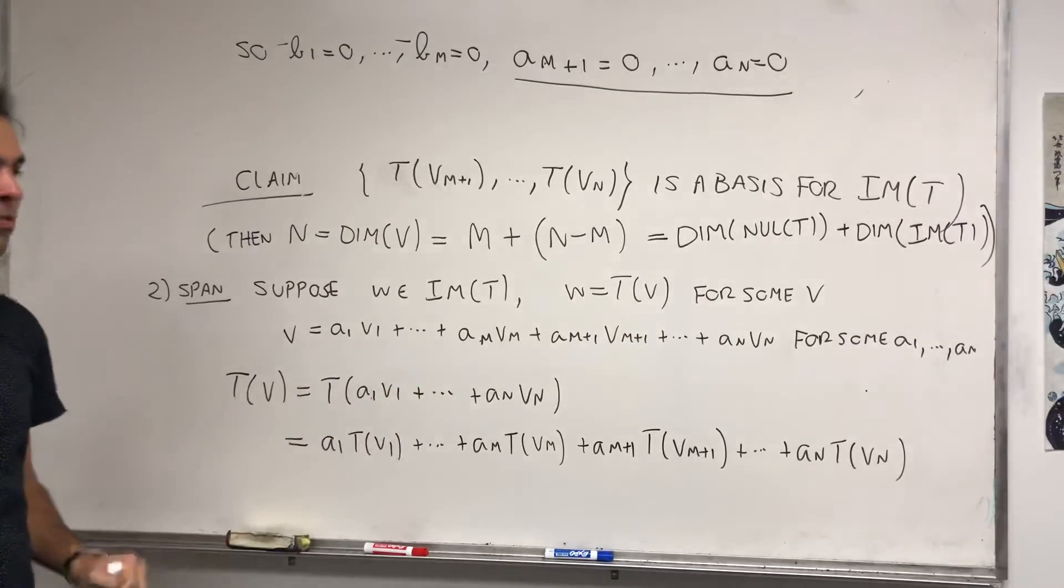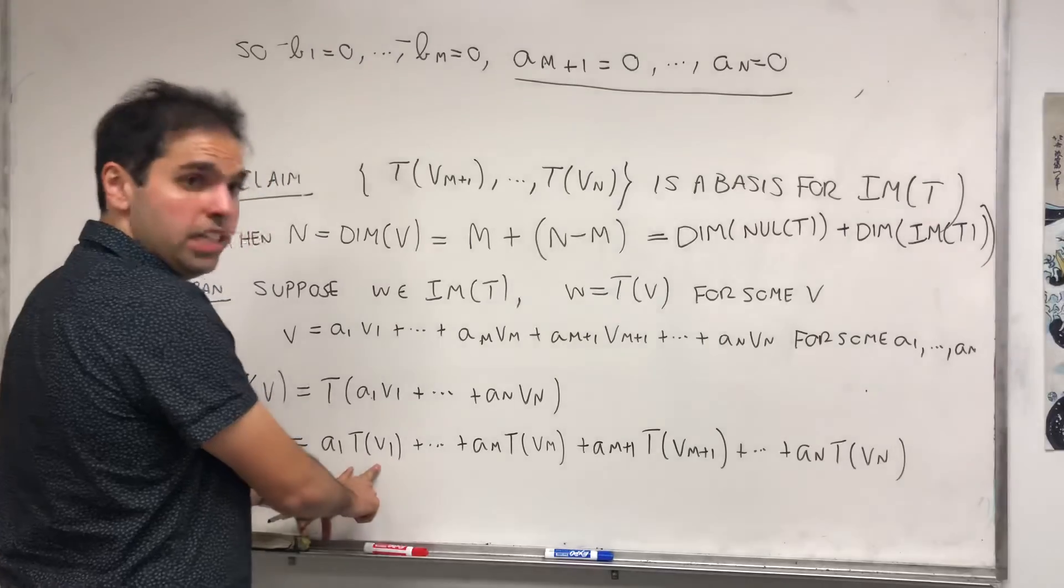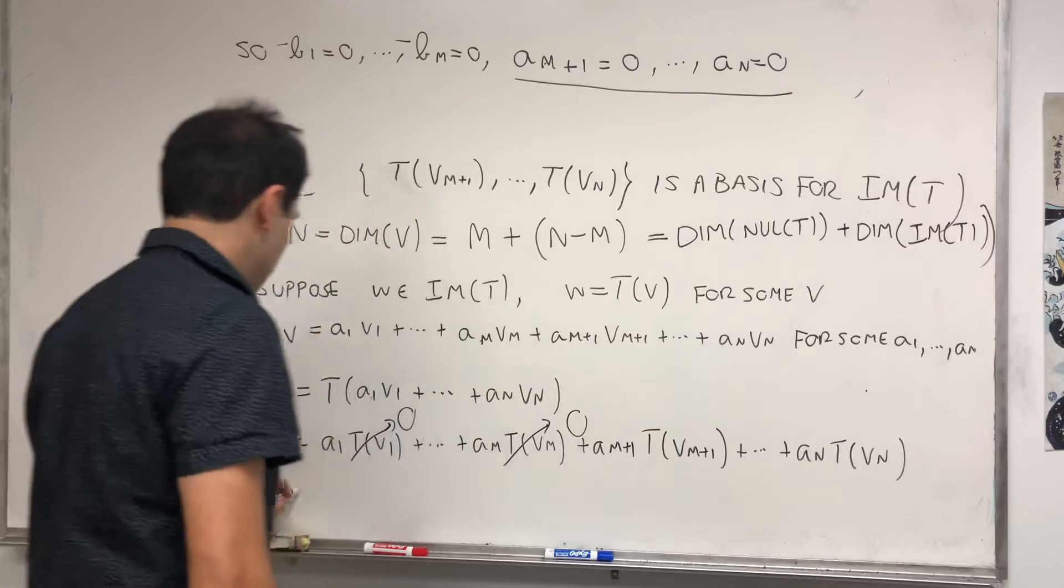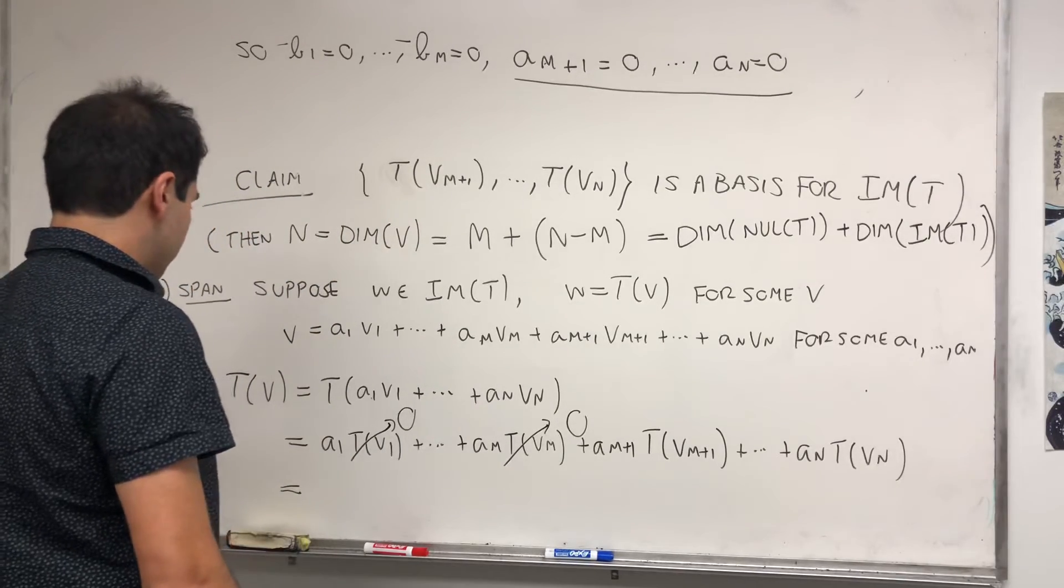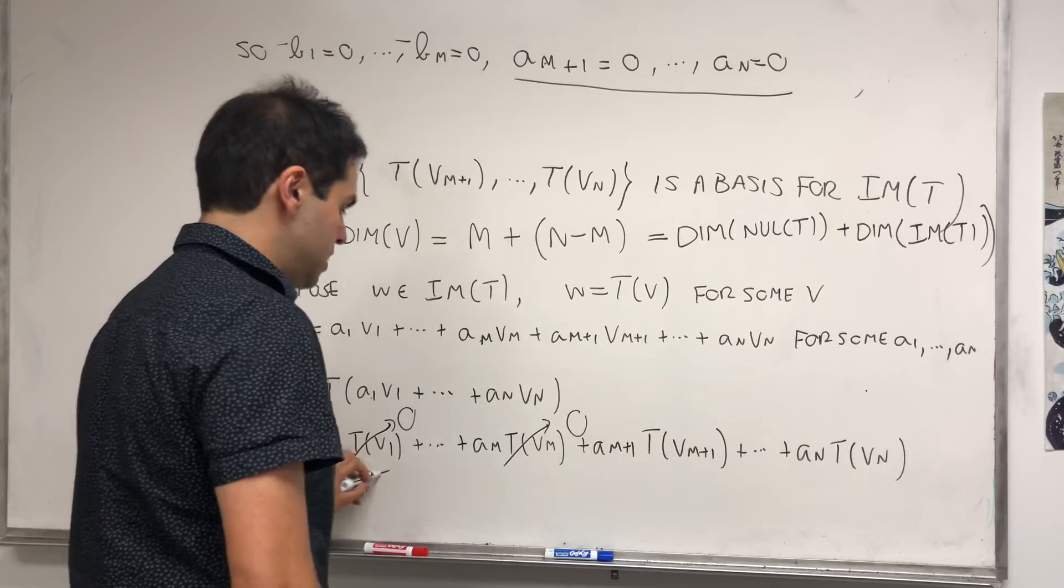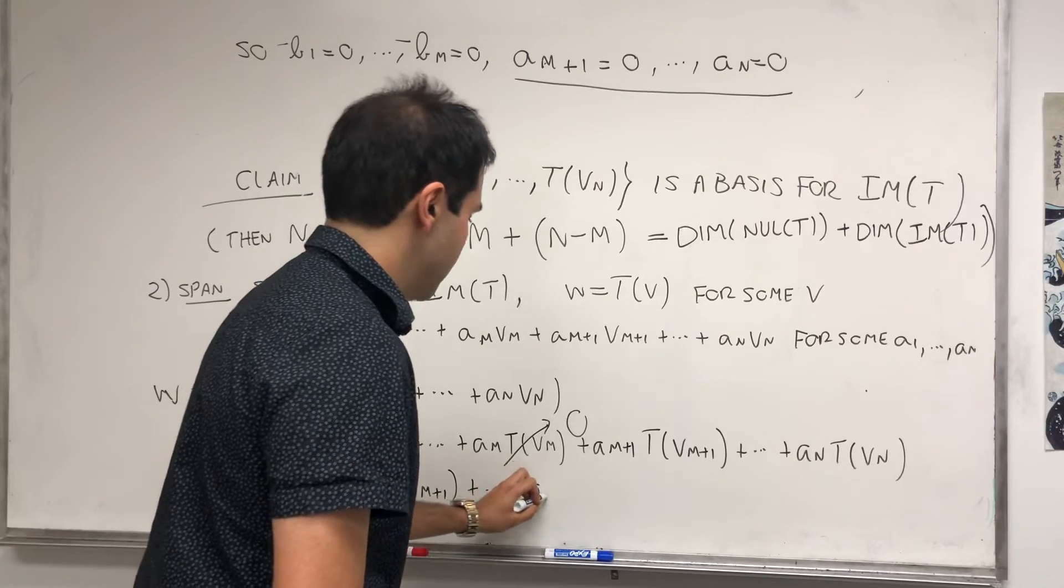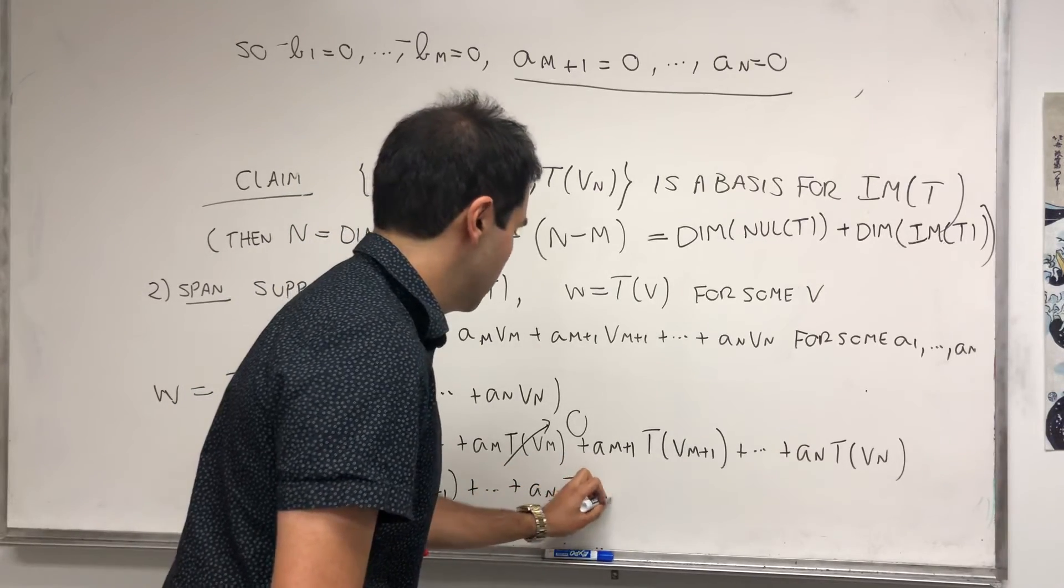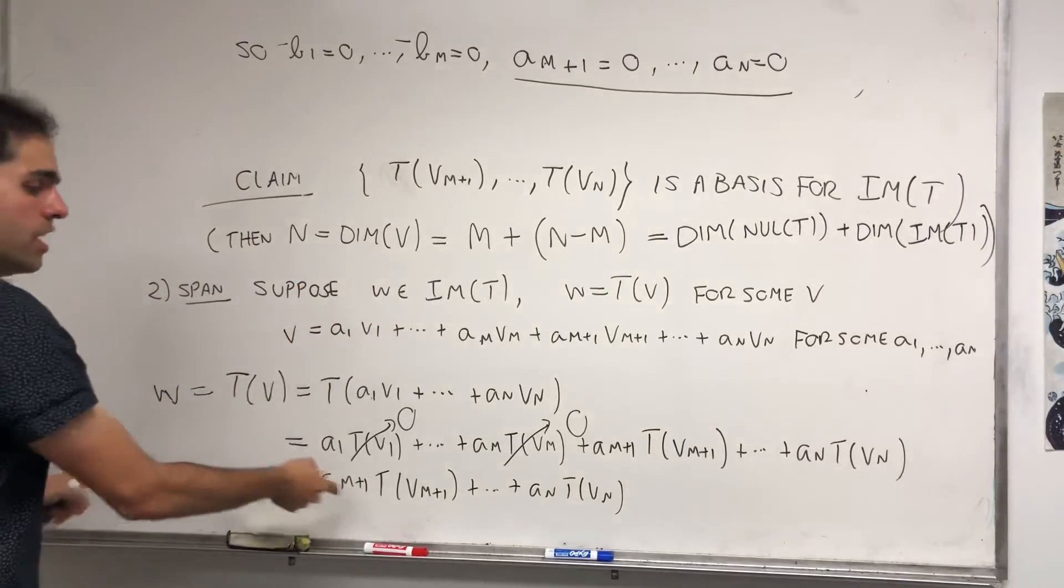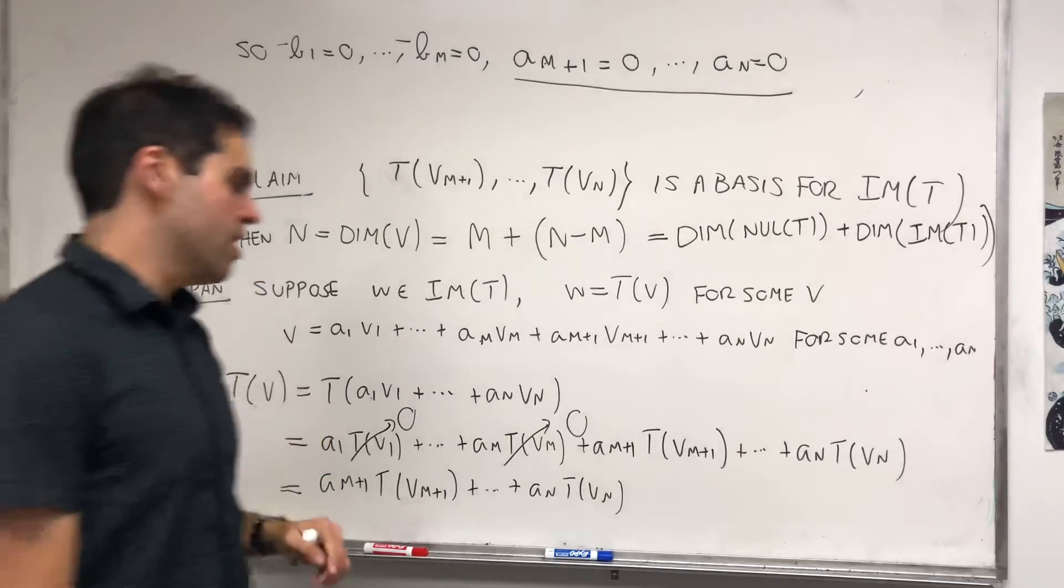But now remember, what was V1 up to Vm? They're all in the null space. So T(V1) up to T(Vm), they're all zero. And so in the end, we get that W equals Am+1·T(Vm+1) + ... + An·T(Vn). So what do we have? Any vector in the image is a linear combo of those basis vectors, and therefore it spans.